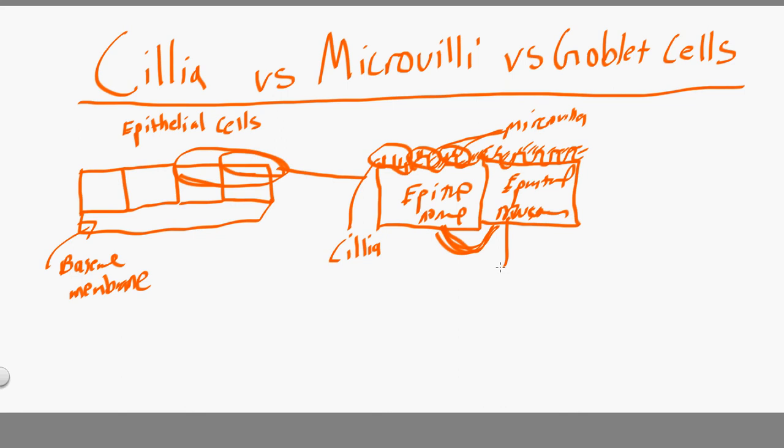It's secreting mucus at the apical layer — going to the right and to the left and getting on top of everything else, particularly in the digestive system and many other areas. Goblet cells and epithelial cells are really the same thing, but the difference is one secretes mucus and one doesn't.